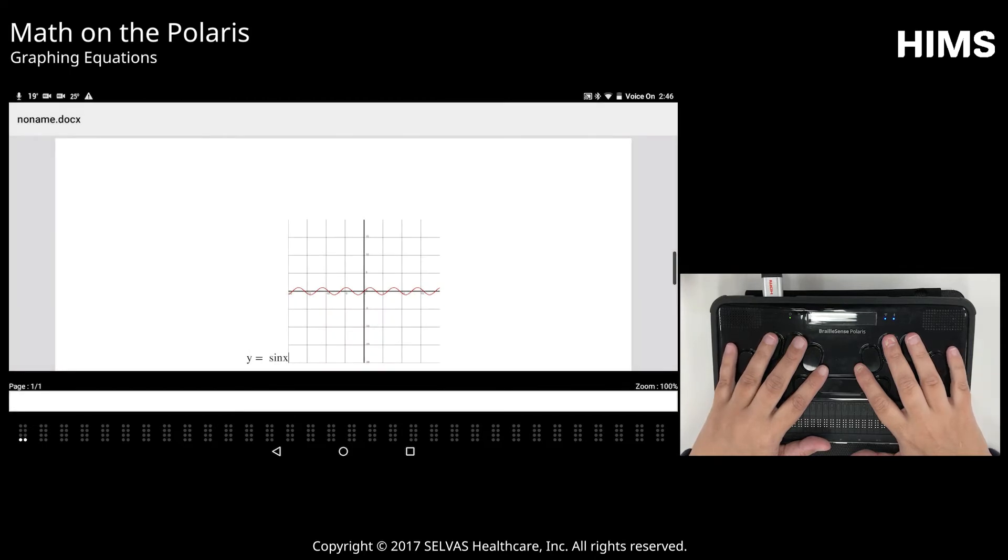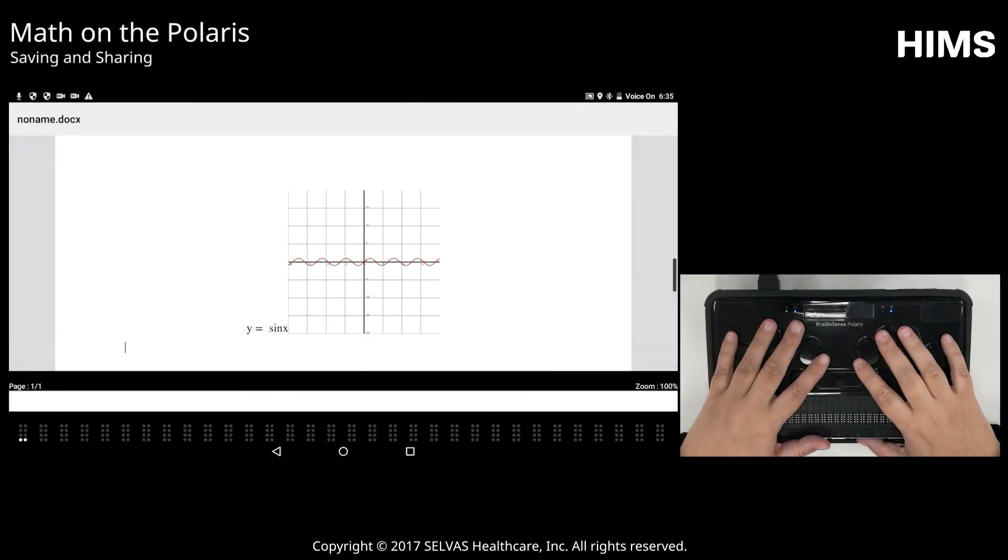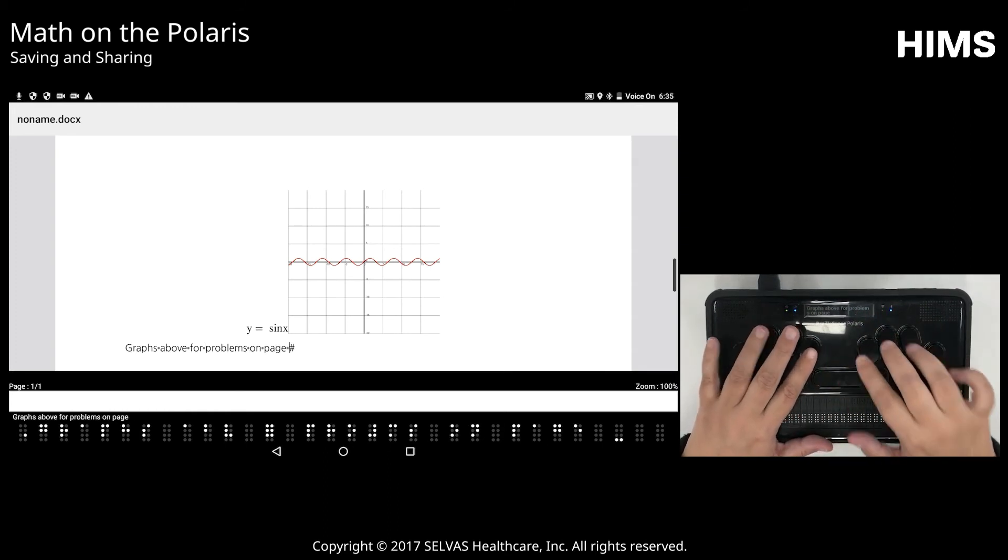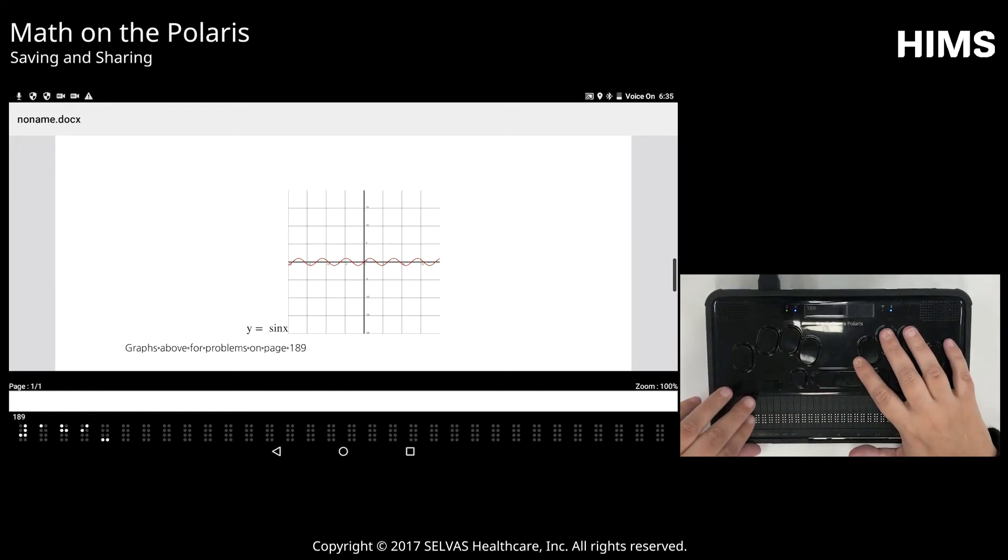So this gives you a little bit of an introduction about how to set your math code, type Nemeth math, and do some graphs. And now I'm finished with math, so I can exit Nemeth mode in the same way that I entered it using backspace m. And it announces end Nemeth mode. And now if I need to make a note about these graphs, I can type regular text. So I can say graphs for math problems on page 189.